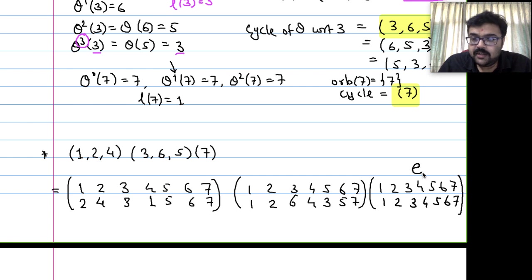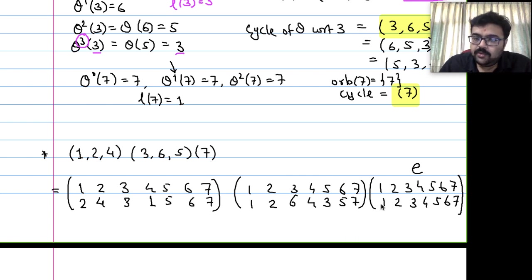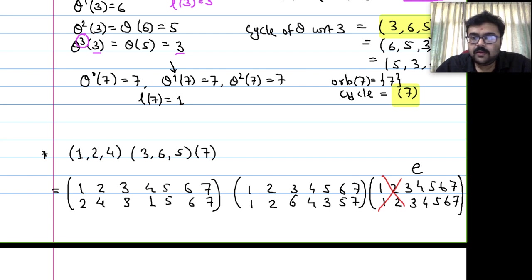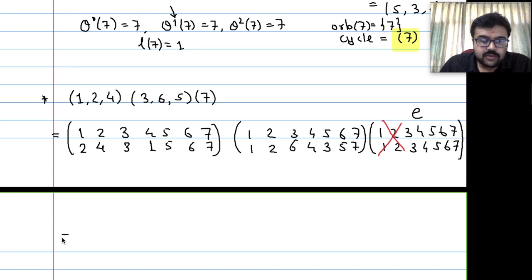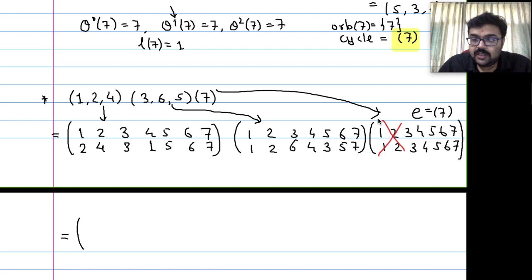The cycle of length 1 is nothing but the identity. So whether we multiply this cycle or not it does not matter. Let us multiply just the first two cycles, (1, 2, 4) and (3, 6, 5), written as permutations on {1,2,3,4,5,6,7}, and compute their product.